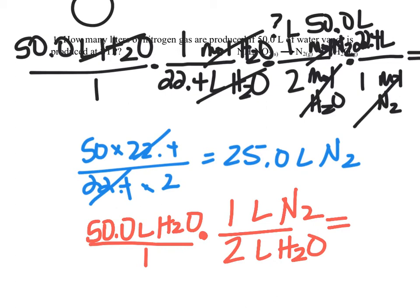You don't have to use the shortcut, but it will make a problem go very fast. We basically have 50 in the numerator and 2 in the denominator — one liter of nitrogen for every two liters of water — and as predicted, we get 25 liters of nitrogen. So once again, this is for gases only, and we're doing a volume ratio instead of a mole ratio, typically something with liters.